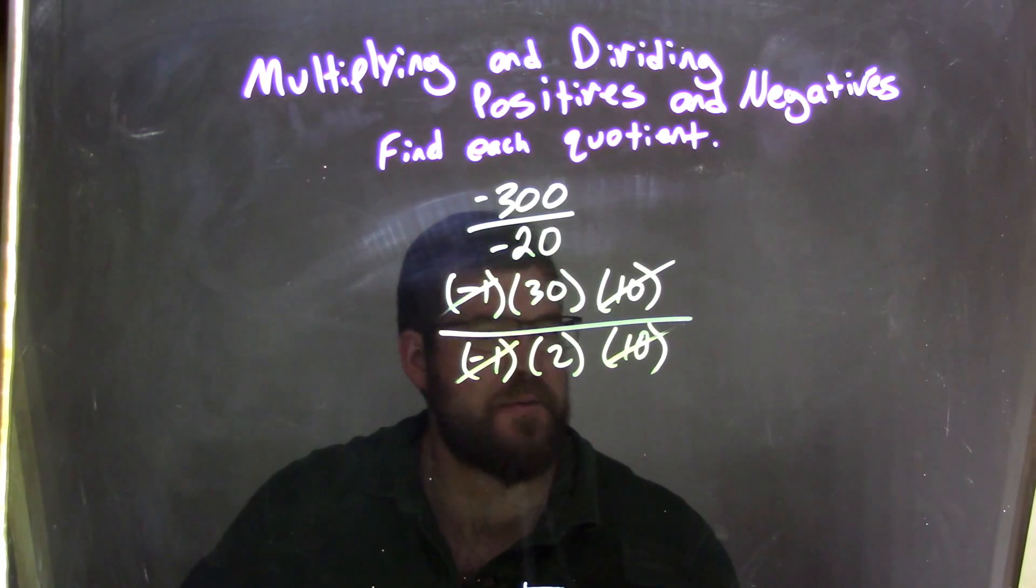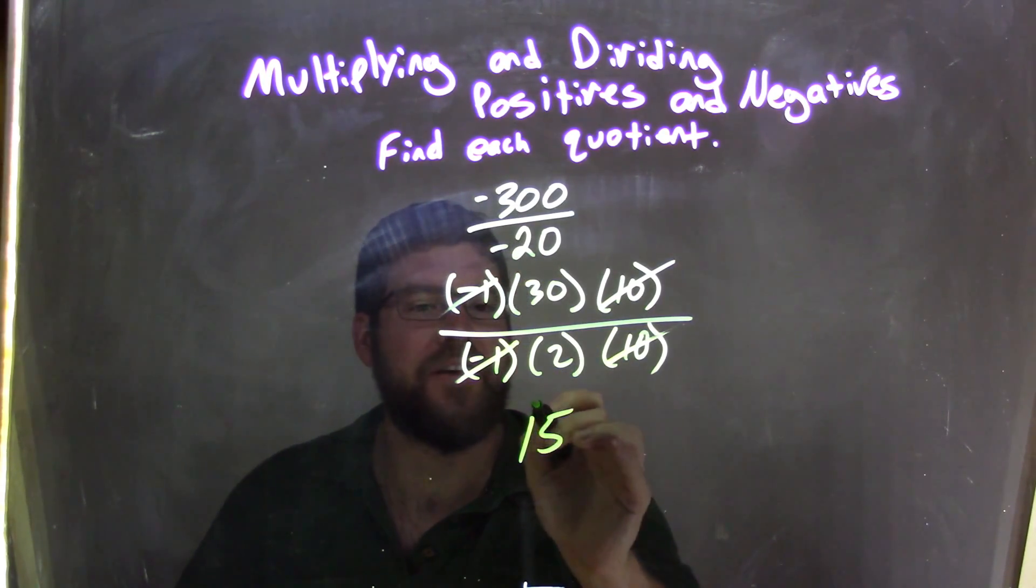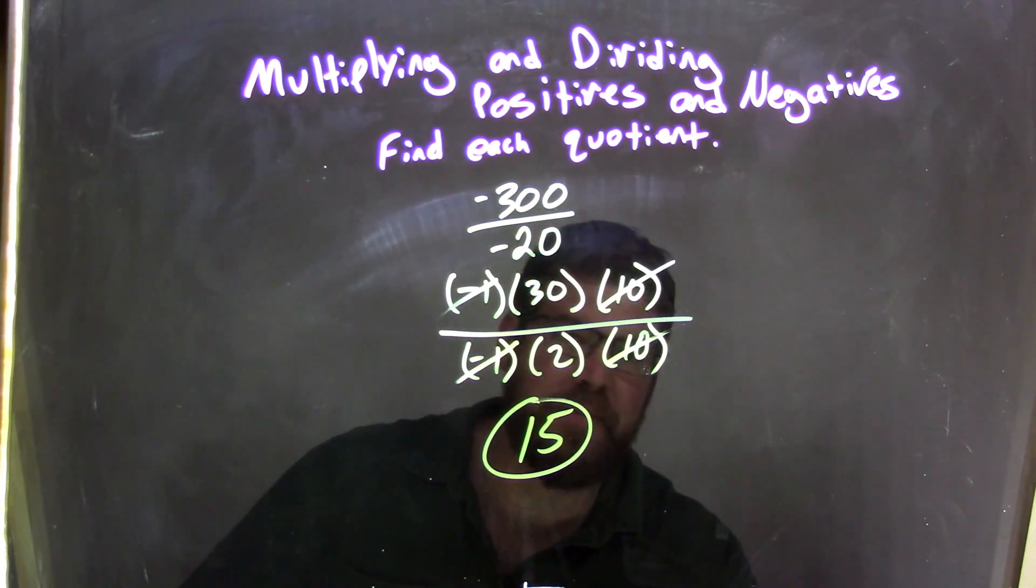Well, what's 30 divided by 2? Do you know? Now, 30 divided by 2 is just 15, and 15 is what's left here, and that's our final answer.